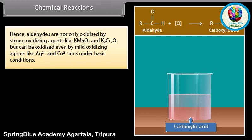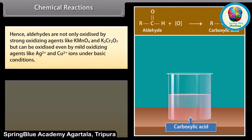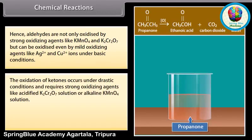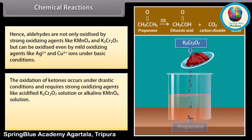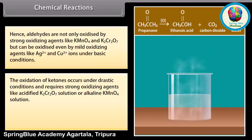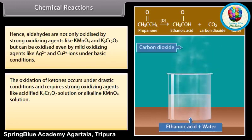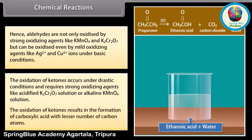The oxidation of ketones occurs under drastic conditions and requires strong oxidizing agents like acidified potassium dichromate solution or alkaline potassium permanganate solution. The oxidation of ketones results in the formation of carboxylic acids with a lesser number of carbon atoms.